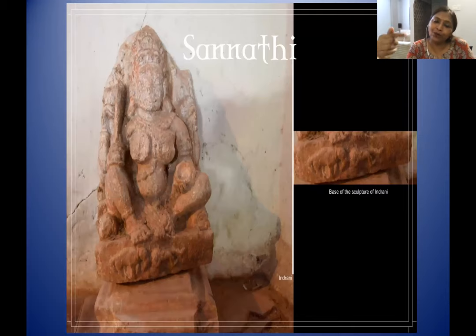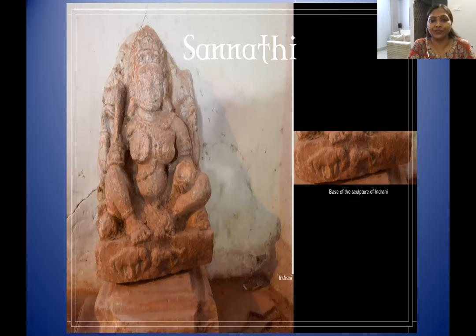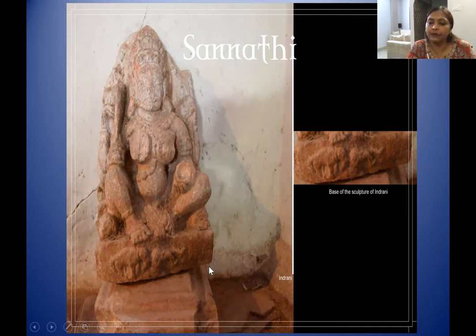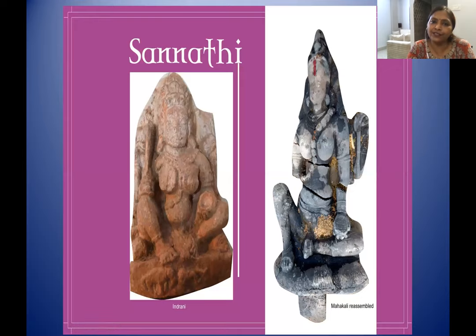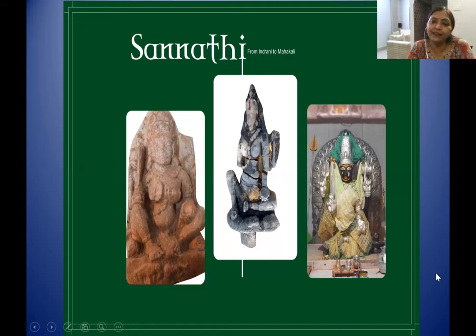Inside the temple complex, we find an earlier goddess similar in features — probably Indrani from the Saptamatrikas, identified by an elephant and a female giving birth. So we have three generations of goddess at this site: the earliest one inside the temple, the second one under which the Ashokan inscription was found, and the latest one currently worshipped inside the temple.